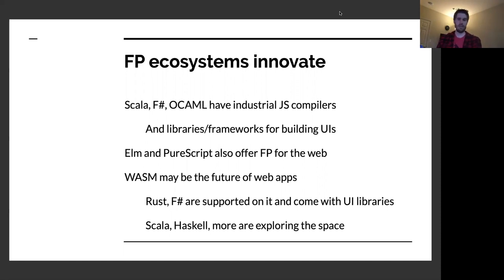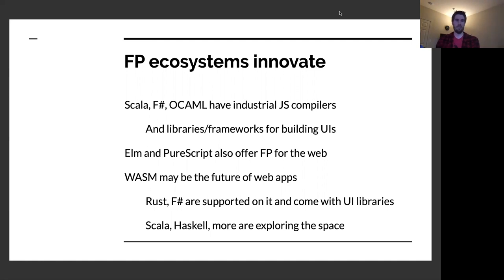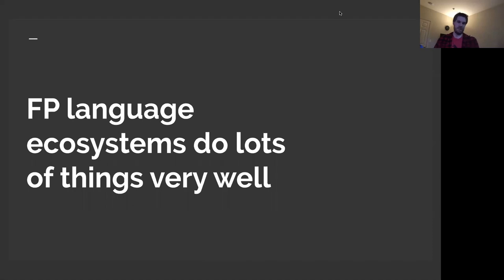If you want to use Elm or PureScript, you can just do it without JavaScript. Functional programmers are offering really great ways to build UIs for the web. Web Assembly is also an interesting space — Rust and F# already have fully supported ways to build UIs with WebAssembly with UI libraries, and I know Scala and Haskell have WASM support as well. This is potentially the future of web applications, and we're already seeing FP languages working in this space in a supported manner.